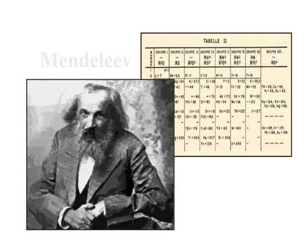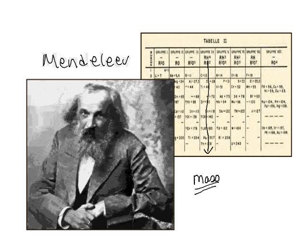Mendeleev is the father of the periodic table, and he is given credit for the first arrangement of elements that allowed us to predict properties. He basically arranged elements by similarities in properties and noticed that as masses changed, properties also changed. We now know that it is the number of protons and the number of electrons that give us the different properties in atoms, but Mendeleev was able to use his very crude periodic table to predict quite a few properties of elements.